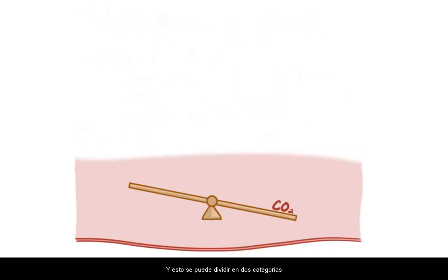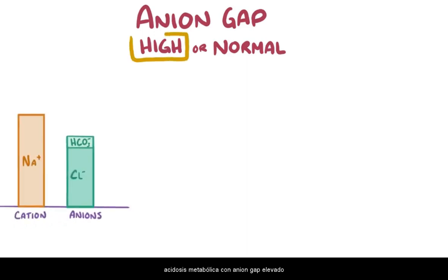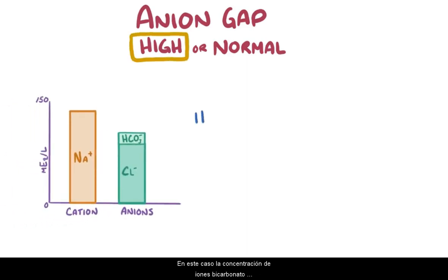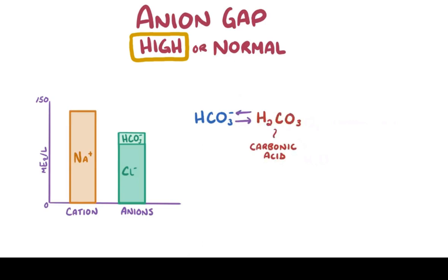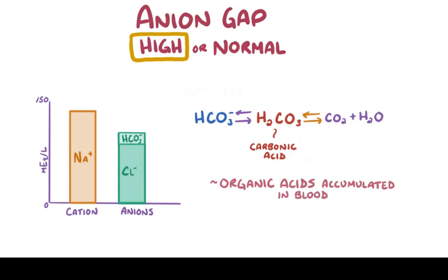This can be broken down into two categories, based on whether the anion gap is high or normal. The first category is a high anion gap metabolic acidosis. In this case, the bicarbonate ion concentration decreases by the binding of bicarbonate ions and protons, which results in the formation of carbonic acid, which subsequently breaks down into carbon dioxide and water. These protons can come from organic acids which have accumulated in the blood, but they can also come from increased production in our body.